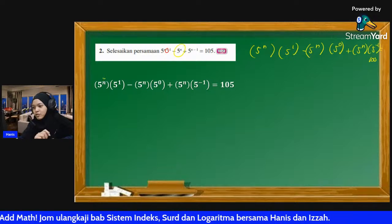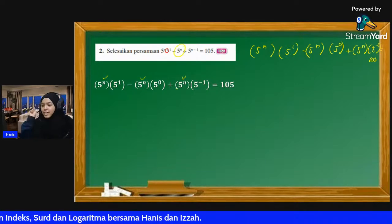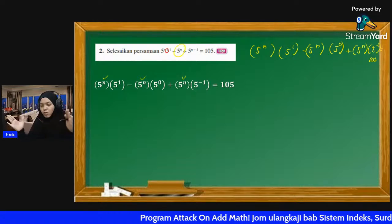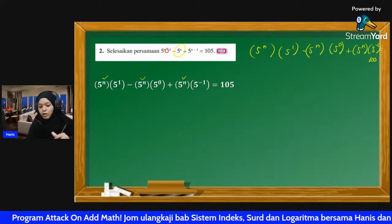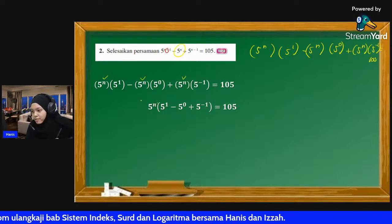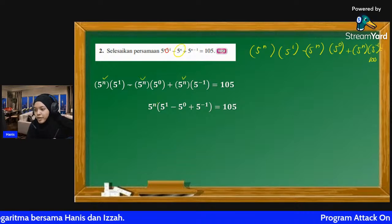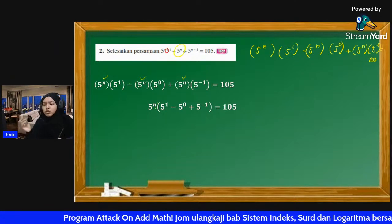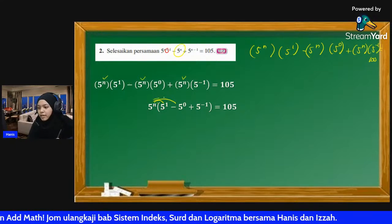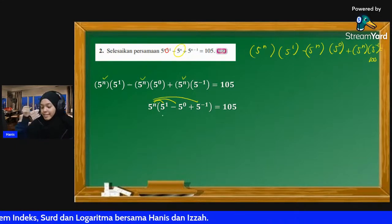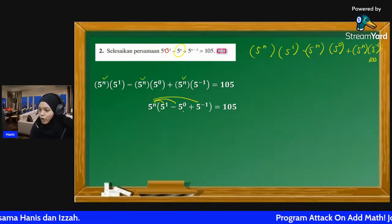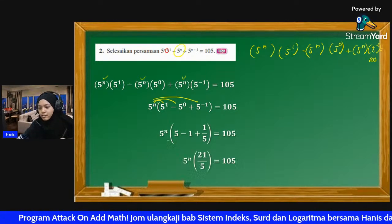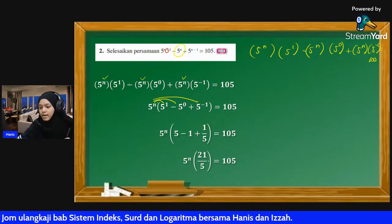Kita buka dia. Kat sini ada 5^n, 5^n, 5^n. Bila nombor yang sama kita letak dekat luar bracket - kita faktorkan dia. Benda yang tak sama kita masukkan dalam satu bracket. Jadi saya keluarkan 5^n di luar: 5^n × (5^1 - 1 + 5^(-1)) = 105. Kalau tak percaya betul ke, cuba darab balik - mesti betul. Bila dapat macam ni, selesaikan dalam kurungan: 5 - 1 + 0.2 = 4.2, jadi 5^n × 4.2 = 105. Tunggu - selesaikan: dapat 5^n × 21/5 = 105.